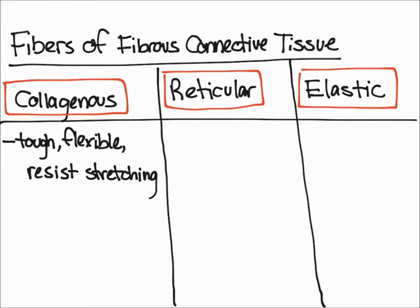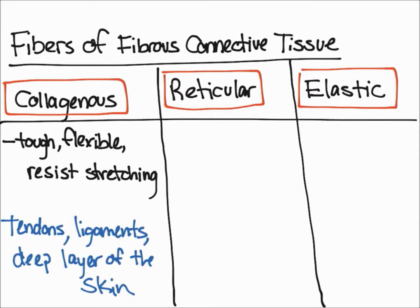So let's write them down — tendons, ligaments, and the deep layer of the skin are mostly collagen. The next type of fiber we're going to talk about is reticular fibers.